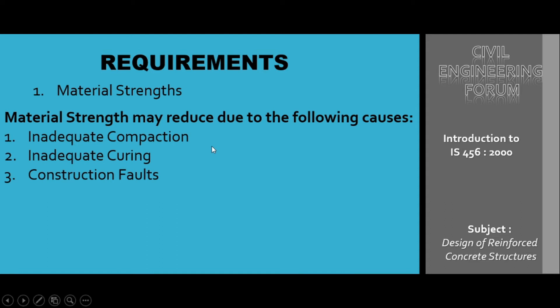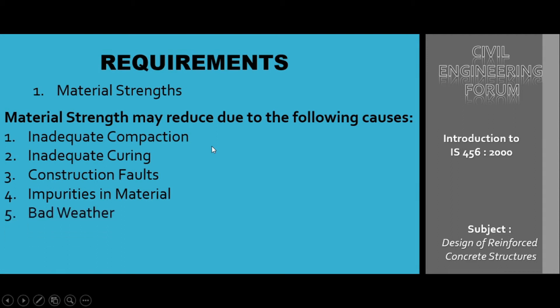The third cause is construction faults — there may be numerous faults during construction that decrease material strength. Fourth is impurities in material; for example, cement may have numerous impurities, and coarse or fine aggregate may have impurities like soil, both leading to strength reduction. The fifth cause is bad weather — for example, concreting in summer may cause evaporation of water, making the water-cement ratio inadequate to give sufficient strength. Sixth is corrosion of reinforcement, which commonly decreases the tensile strength of the reinforcement.